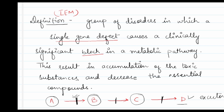If there is a blockage in this metabolic pathway, there will be accumulation of toxic substances. If this enzyme is deficient, A will accumulate; if that enzyme is deficient, D will accumulate. These substances will be toxic. D may be the excretory form or an essential compound, so there is also a decrease in essential compounds. The definition of IEM: these are a group of disorders in which a single gene defect causes a clinically significant block in a metabolic pathway, resulting in accumulation of toxic substances and decrease in essential compounds.